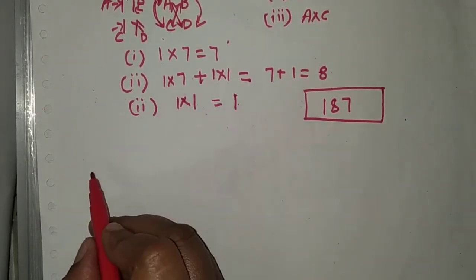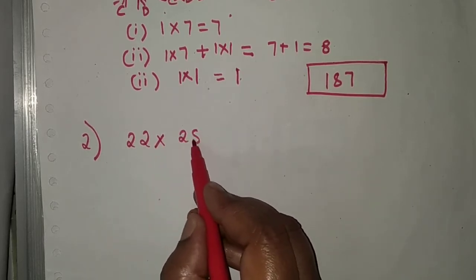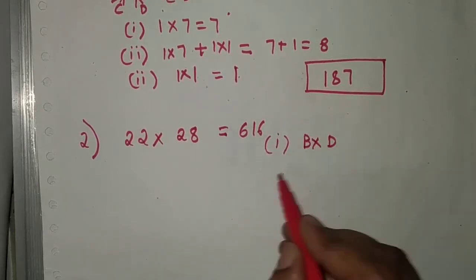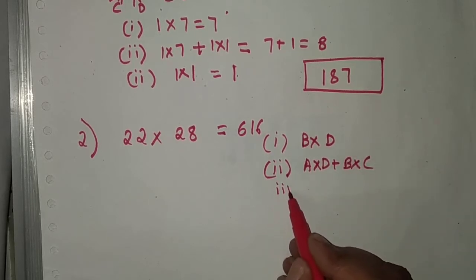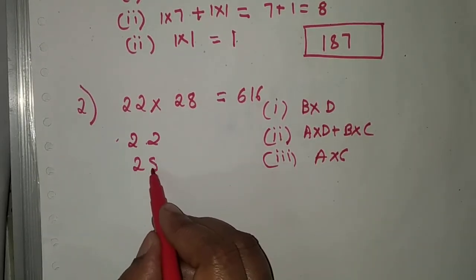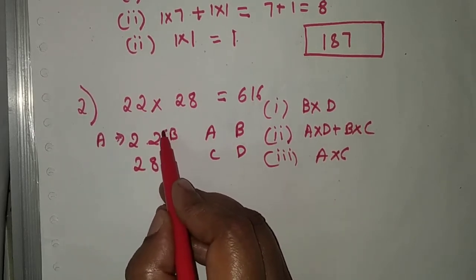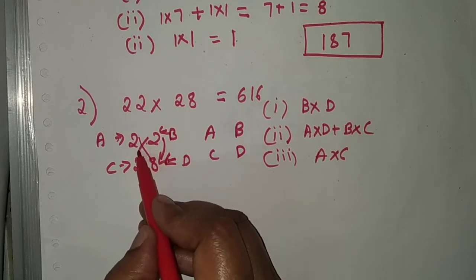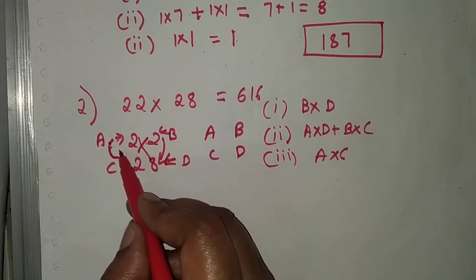Second problem: 22 into 28, and the answer is 616. Same three steps: first is B into D, second is A into D plus B into C, third is A into C. Writing 22 and 28 as A, B, C, D — A is 2, B is 2, C is 2, D is 8.